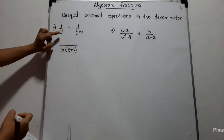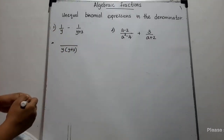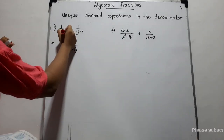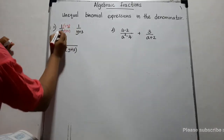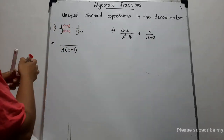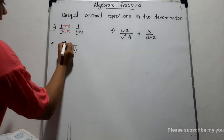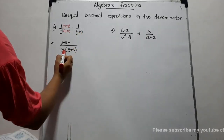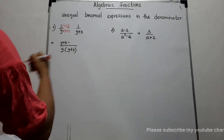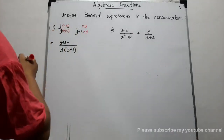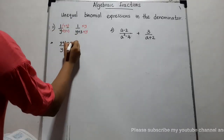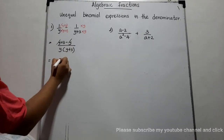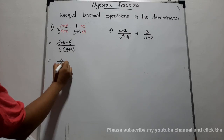To convert the first fraction with denominator Y to the common denominator Y(Y+3), we multiply numerator and denominator by Y plus 3. So 1 times (Y plus 3) gives Y plus 3. For the second fraction, the missing factor is Y, so we multiply by Y: 1 times Y gives Y. Now simplifying: Y plus 3 minus Y — the Y terms cancel. So the answer is 3 over Y times (Y plus 3). Very easy example.